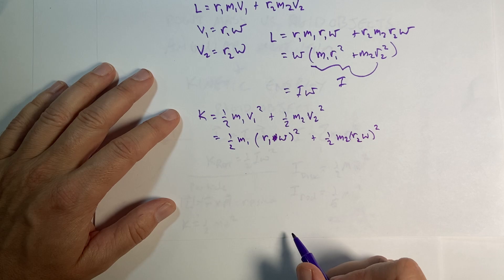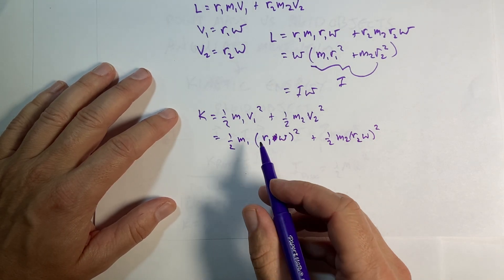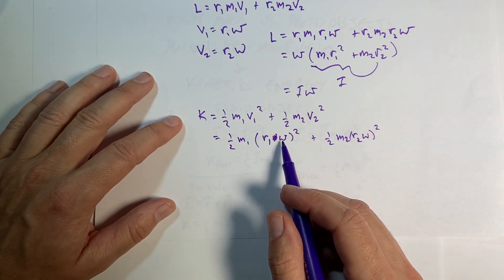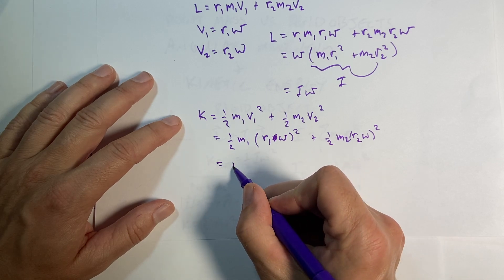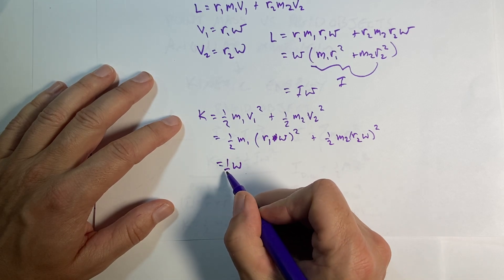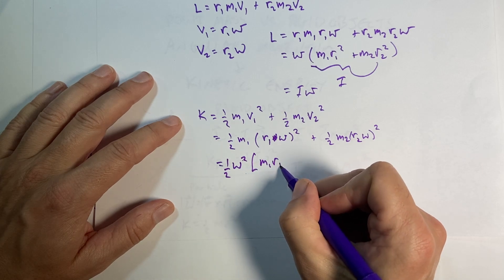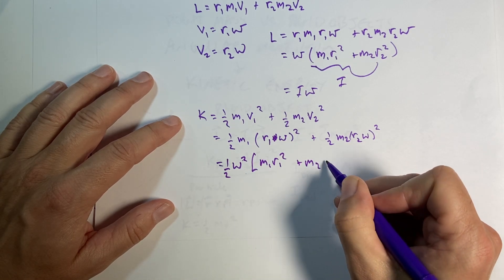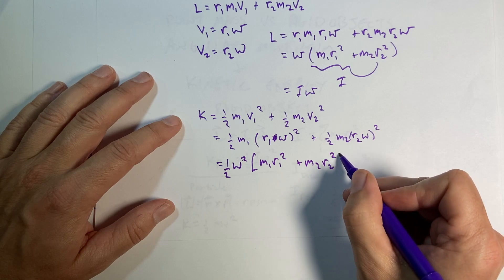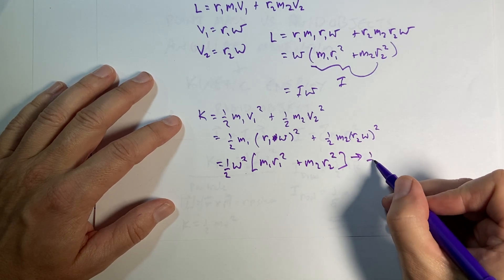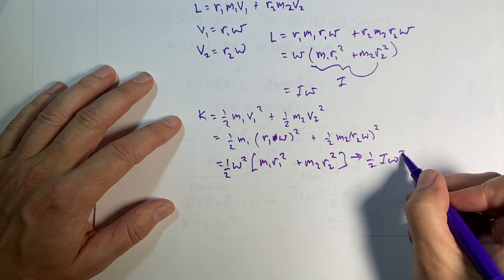And so I can factor out the omega squared and I get omega squared, I get one half omega squared, m1 r1 squared plus m2 r2 squared. And boom, there you go, one half I omega squared.